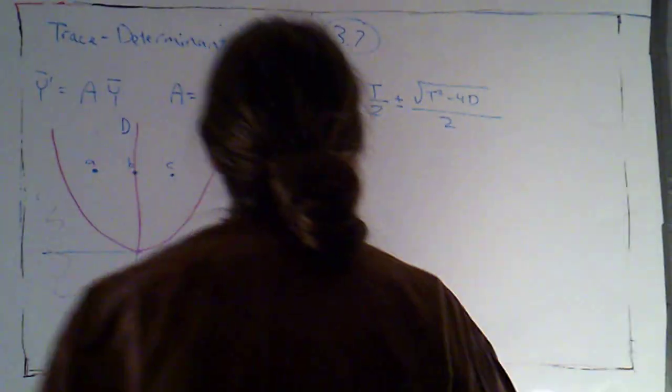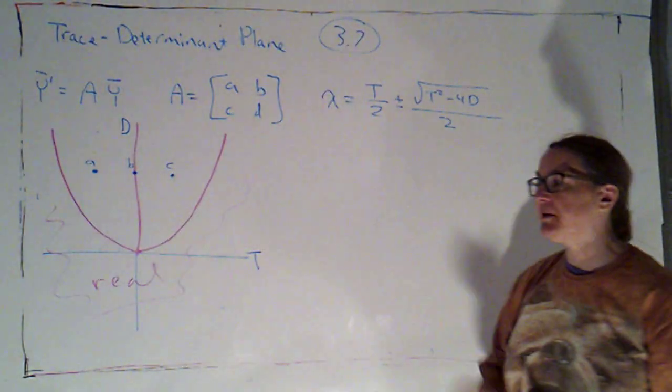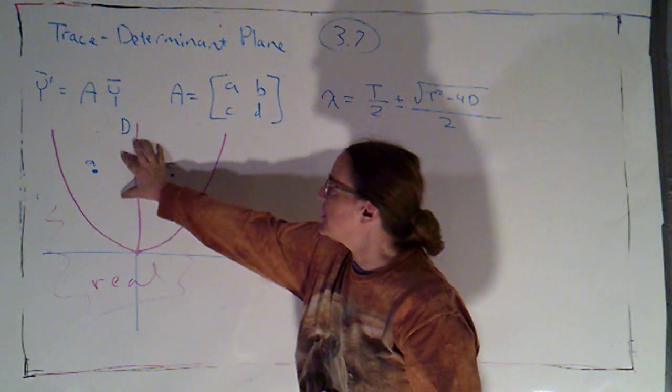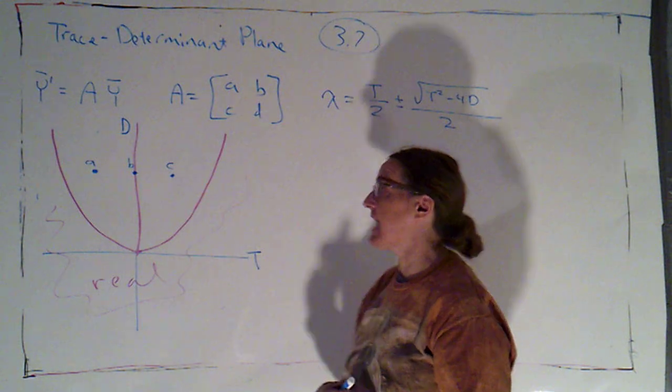Okay, so we're continuing our analysis of the trace determinant plane. In the last video, we took a look at this region, which is where we had complex eigenvalues.